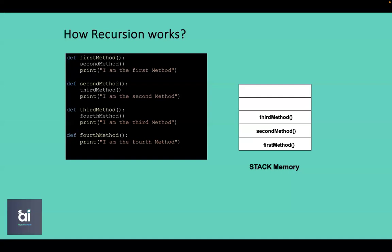The last method here is the fourth method, which executes one line of code without calling any function. This means the system does not need to store it for calling back, so it will not be inserted into stack memory. After finishing execution of the fourth method, the system knows to go back and execute the third method — not the second — and this information comes from the stack memory.